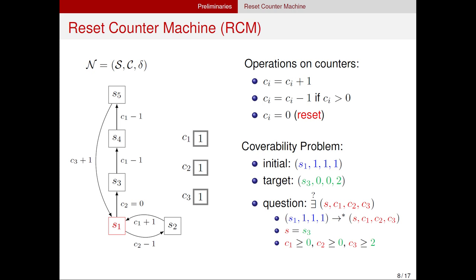Cover between configurations means they are in the same state and every counter is larger than or equal to the corresponding counter of the target. In this example, the initial configuration is in state S1 with every counter valued 1. From state S1, it can perform a decrease operation on counter 2 and go to state S2, then perform an increase operation on counter 1 and go back to state S1. Next it performs operations on a cycle: counter 2 is reset to 0, counter 1 minus 2, counter 3 plus 1, coming back to state S1. Last, it performs a reset operation on counter 2, reaching configuration S3.0.0.2, which covers the target configuration.